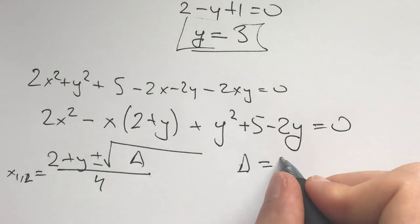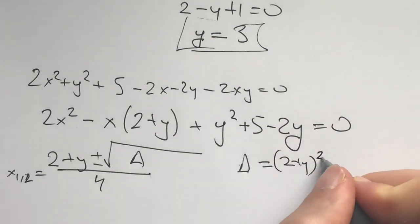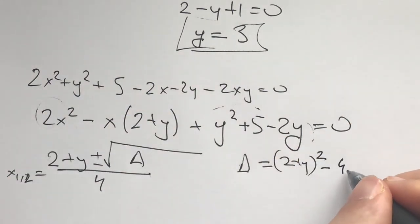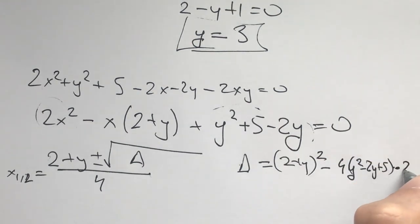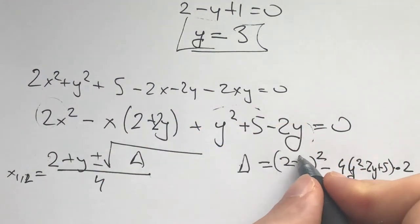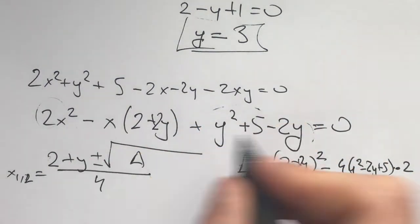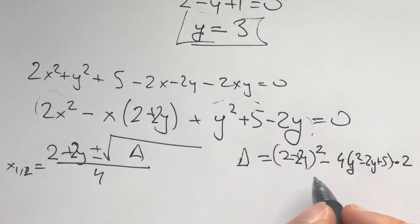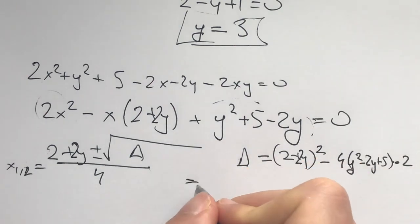What is the discriminant? We have this squared: (2 plus y) squared minus 4 times this times this. So it's minus 4(y squared plus 5 minus 2y) times 2. Actually, a minor mistake. This is 2y and this is 2y. You should be careful with your algebra. This is 2y here as well.